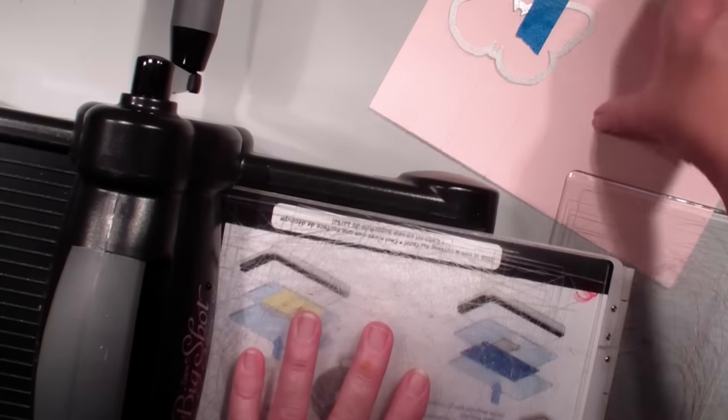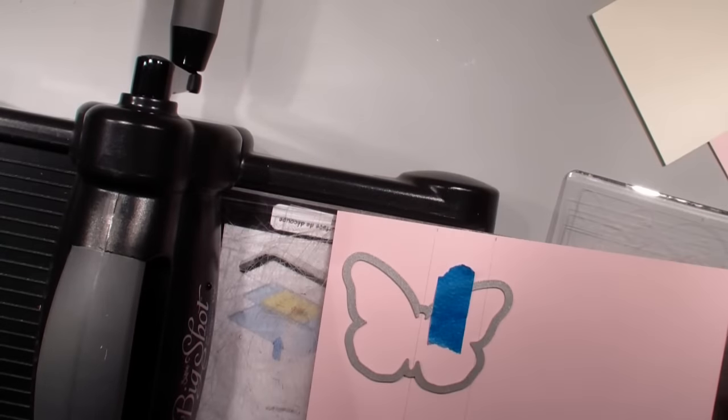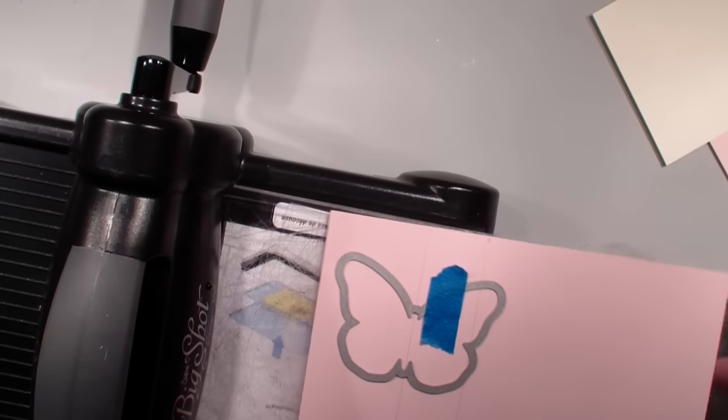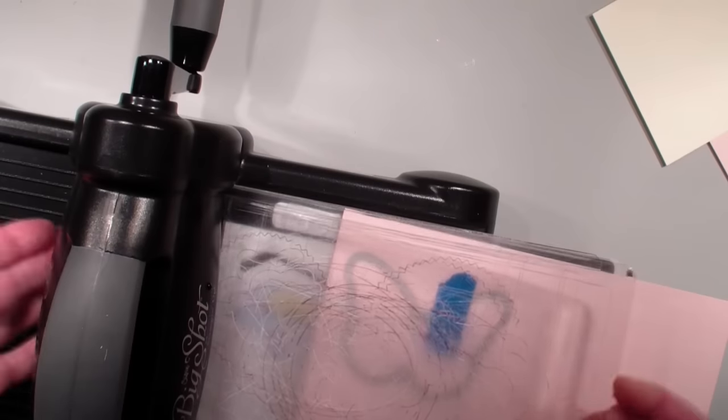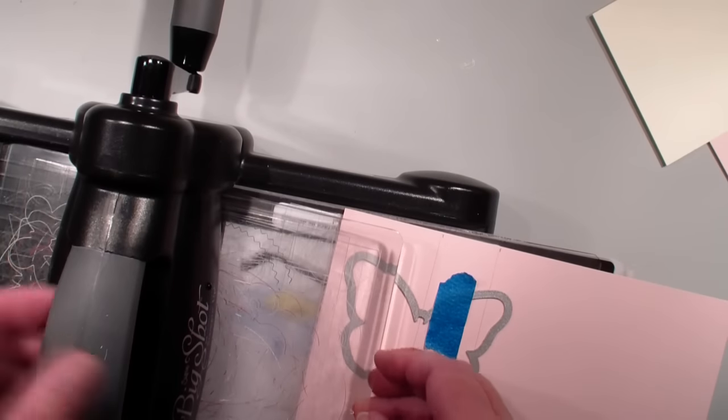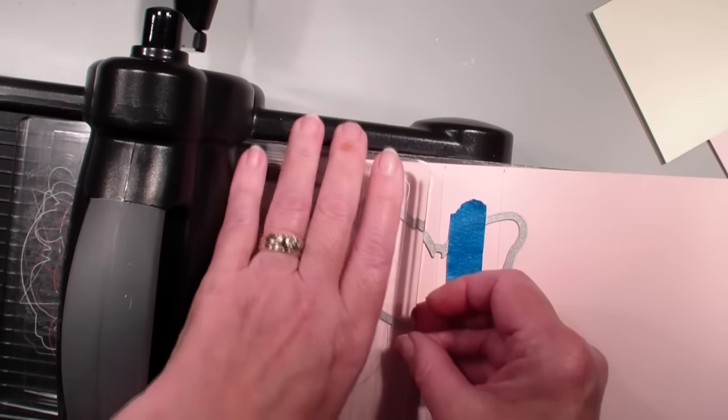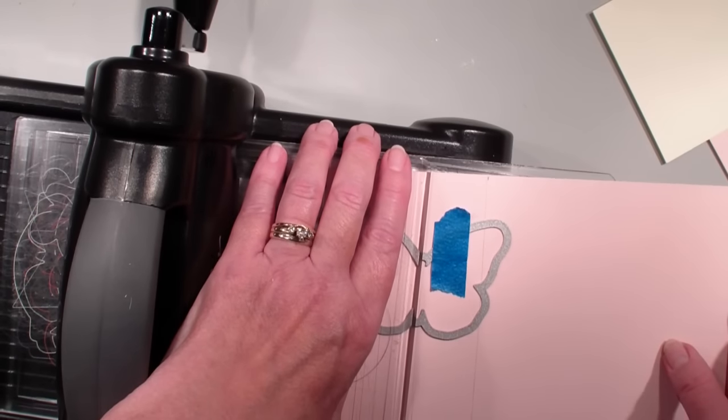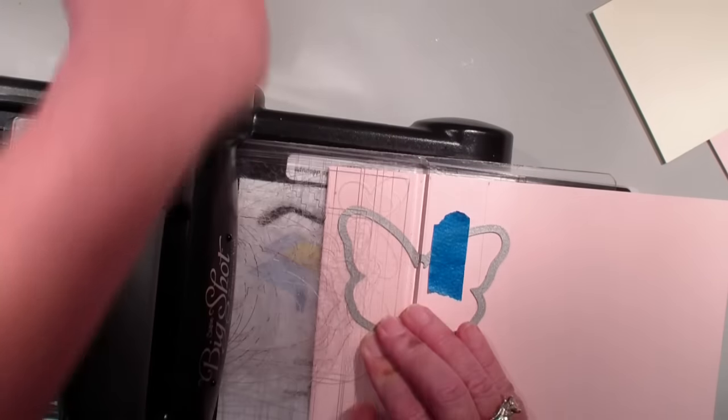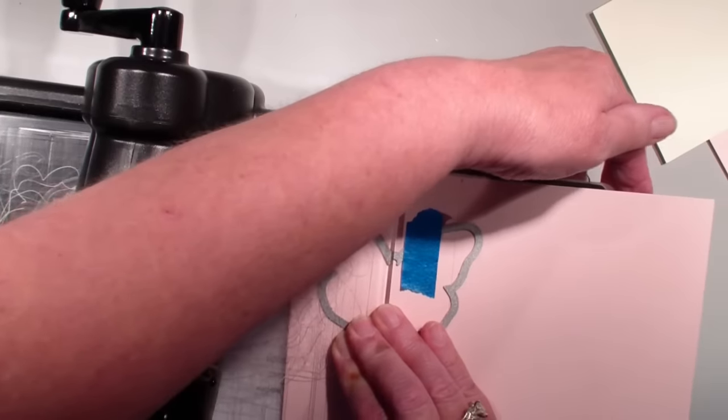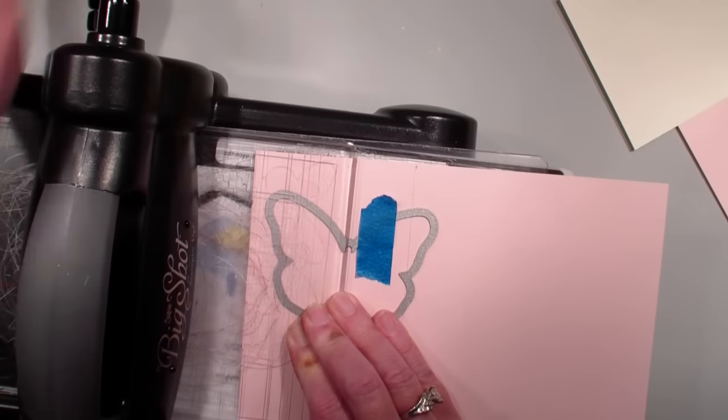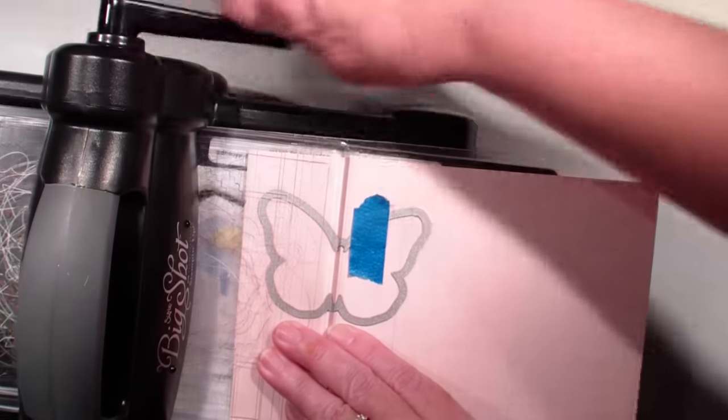Sorry about that. I forgot one of my platforms. What I need to do is to take the top platform. I want the thickest part of my sandwich to go through my big shot. I'm going to lay right on that pencil line that top cutting mat. I'm going to go ahead and run that through the big shot.